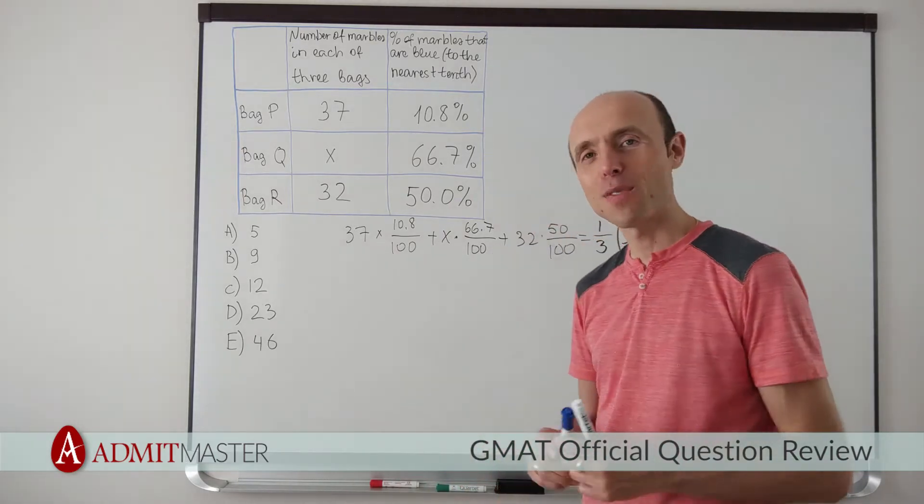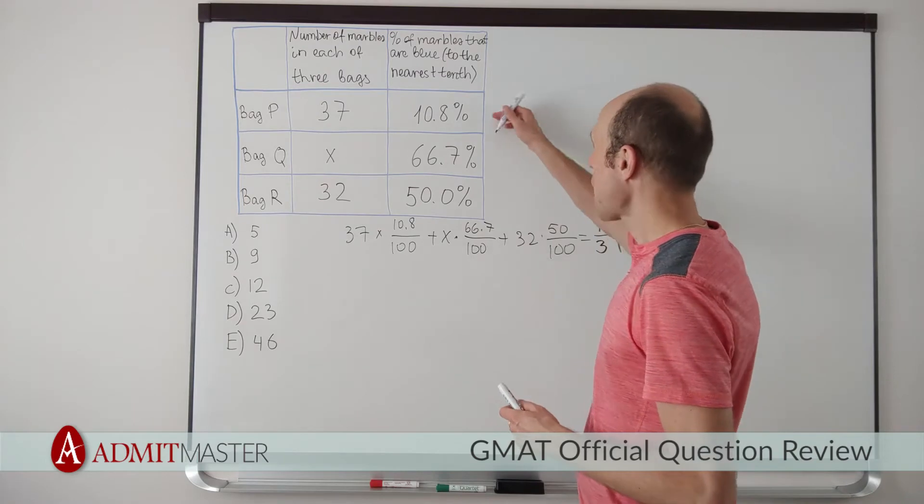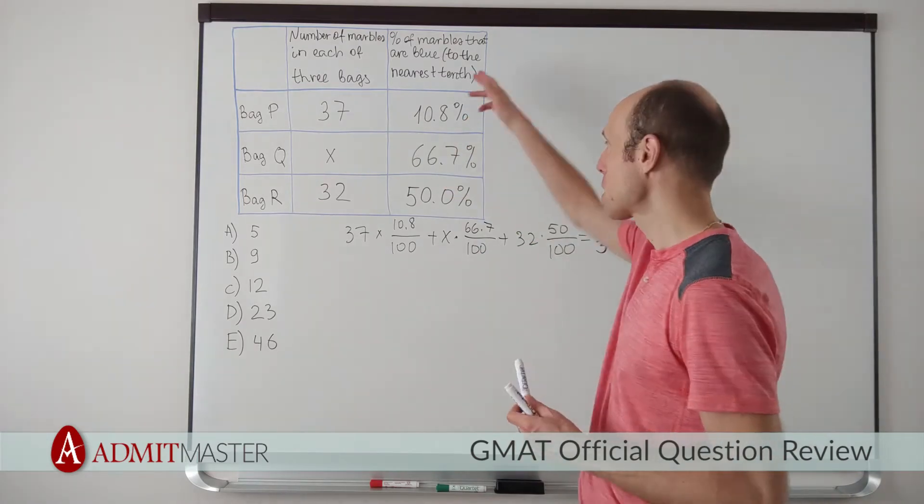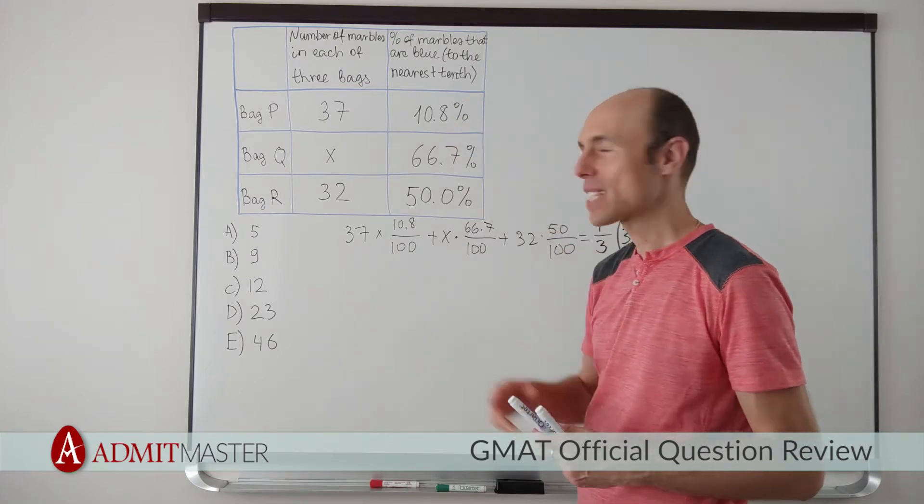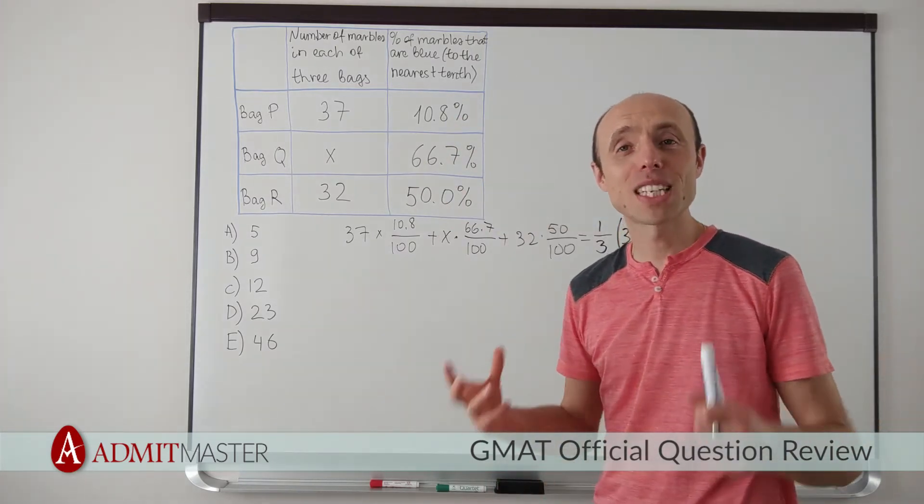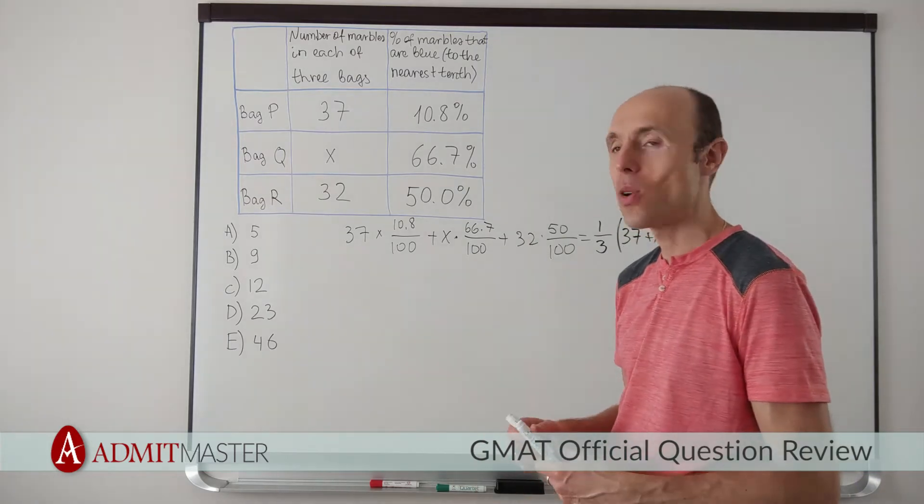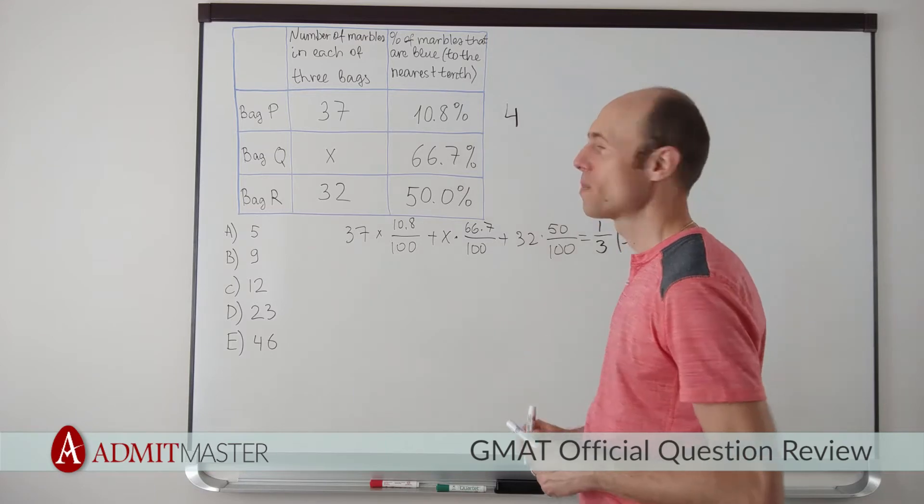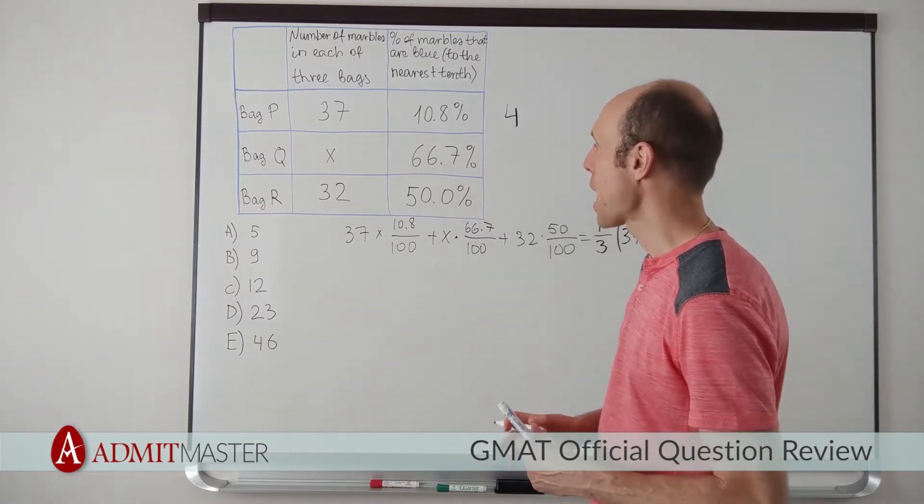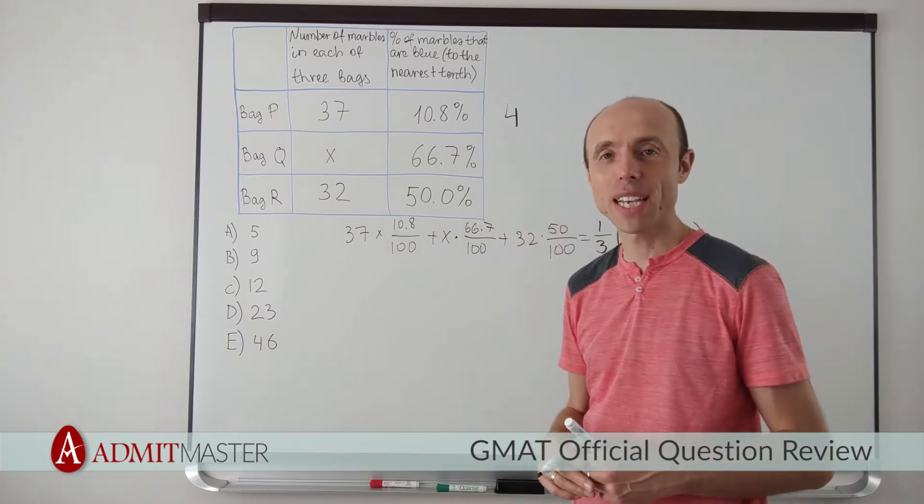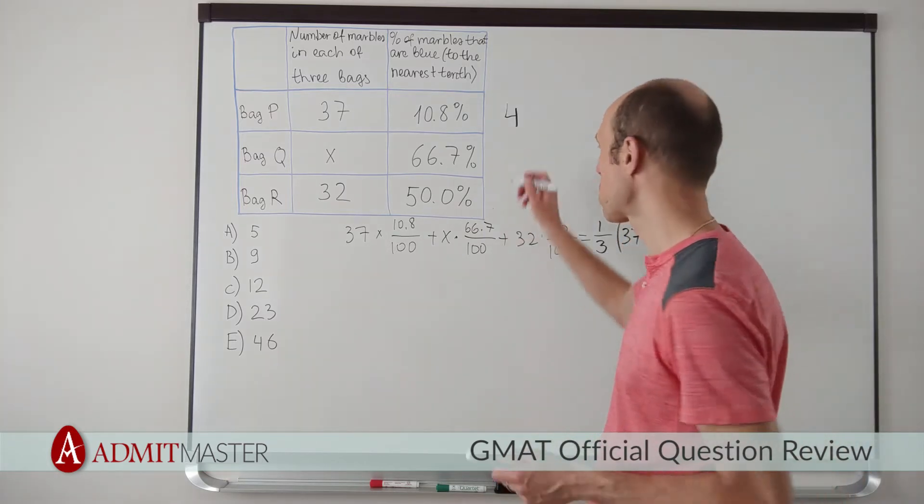The number of blue marbles here in this first bag is going to be approximately 10.8% of 37. So it's a little over 10%. The marbles are indivisible. There is just one marble. So that number has to be equal to 4. Well, how about the second bag? Well, in the second bag, it is 66.7% of x, which is essentially 2 thirds of x.